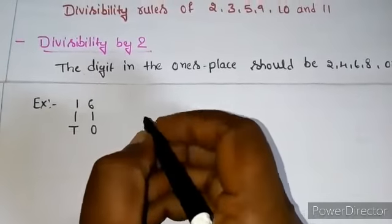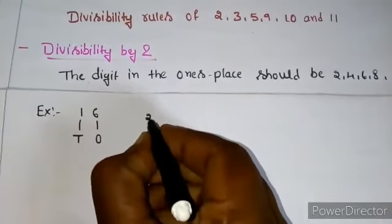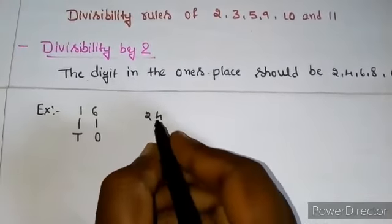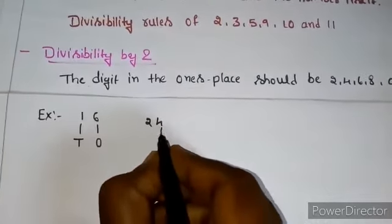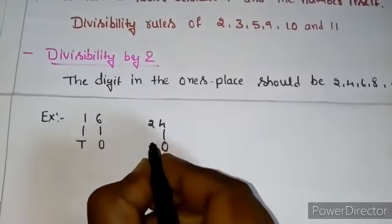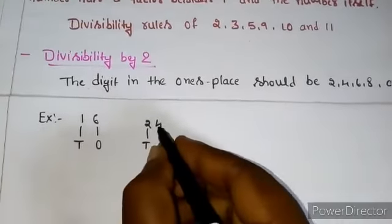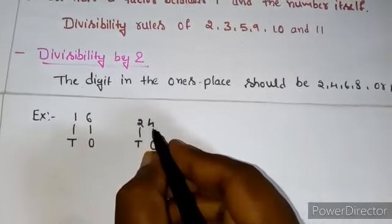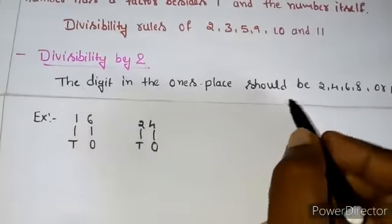Here, another example is 24. Here, 4 is in 1's place and 2 is in 10's place. Therefore, this given number is divisible by 2.